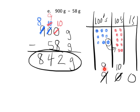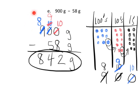So now we have 8 hundreds, 10 tens, and 0 ones. Then we take one of those 10 tens and regroup it into ones — that gives us 10 ones. We go from 10 tens to 9 tens, and from 0 ones to 10 ones. You'll notice in our algorithm we ended up with 8, 9, 10 — exactly matching the place value chart. It's a tricky borrowing problem but very doable for third graders.